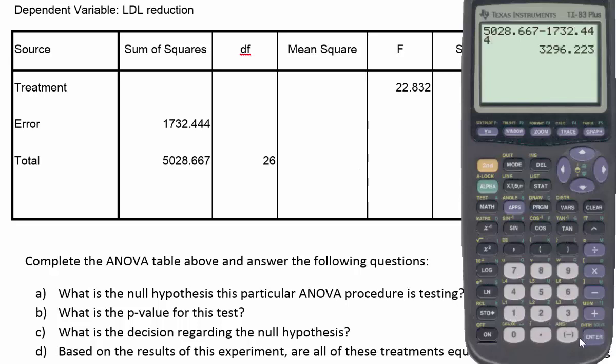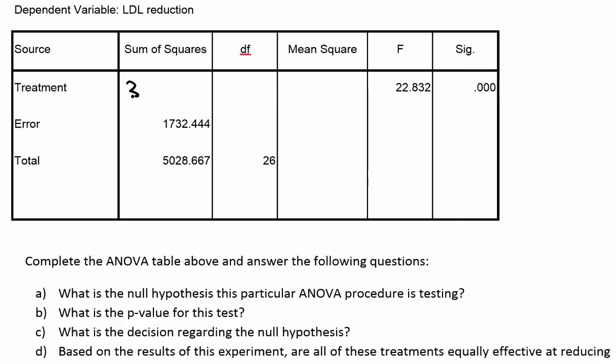And we have our answer: 3,296.223. That's the treatment sum of squares.